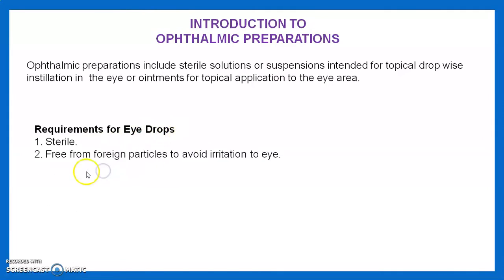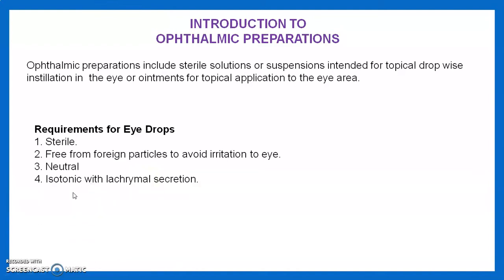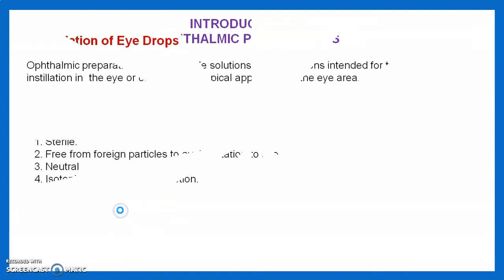It should be sterile. It is free from foreign particles to avoid irritation. It should be neutral and isotonic with the lacrimal secretion. Our lacrimal secretion pH is almost 7.4, so it should be isotonic with our lacrimal secretion.